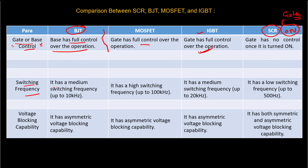Next is switching frequency. BJT has a minimum switching frequency of up to 10 kHz. MOSFET is a high switching device with a very high switching frequency of up to 100 kHz — which is why it is used in digital gadgets. IGBT has a medium switching frequency of up to 20 kHz. SCR has a low switching frequency of up to 500 Hz.